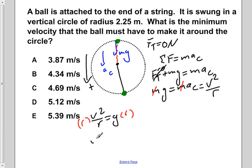This gives us v squared is equal to g times r. And then we want just v, so we're going to take the square root of both sides. This will give us v is equal to the square root of g times r.